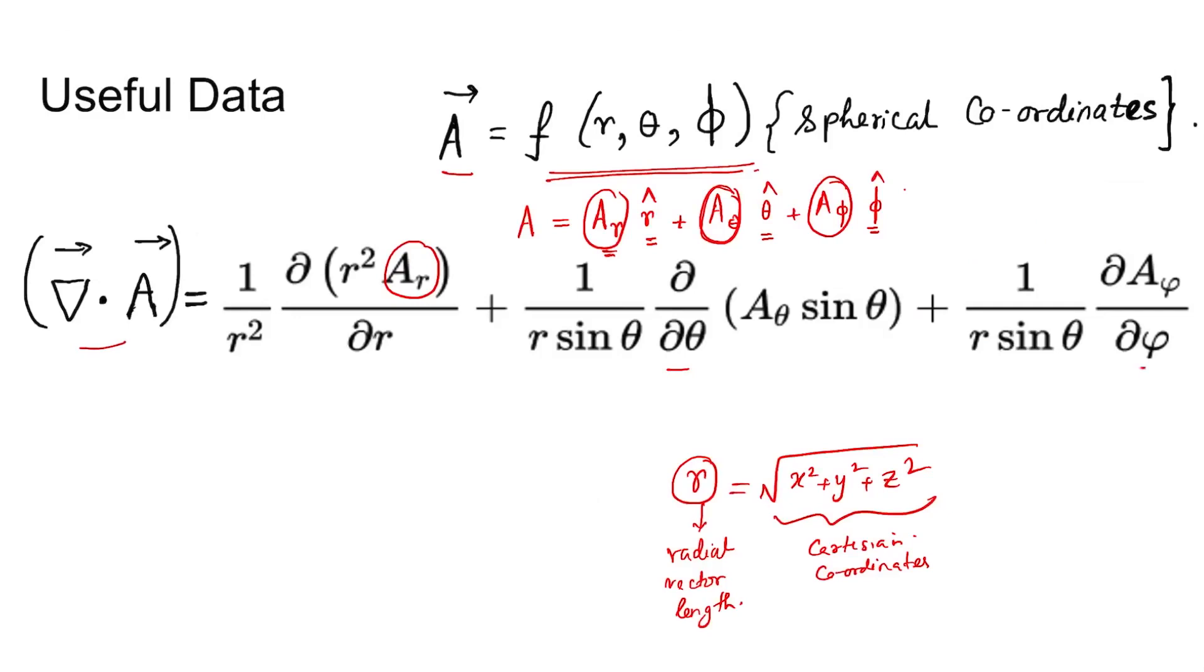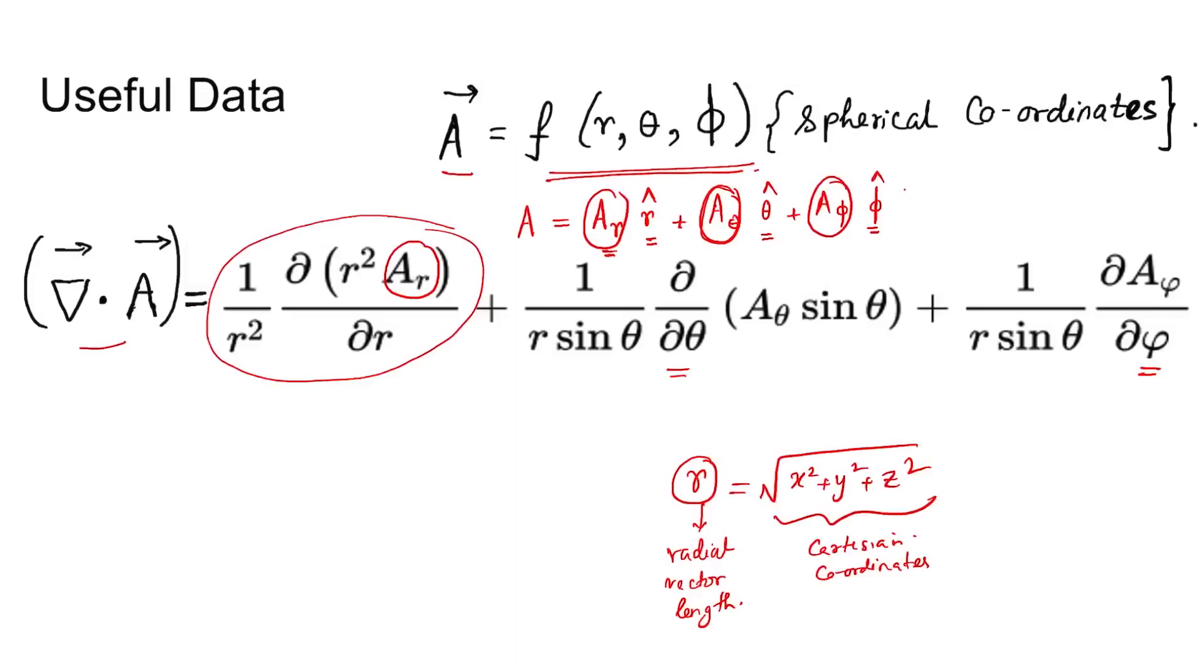Coming to the solution: divergence of A as a function of r is 1 by r squared d/dr of r squared A_r. This equals 1 by r squared d/dr of k r to the power n plus 2.